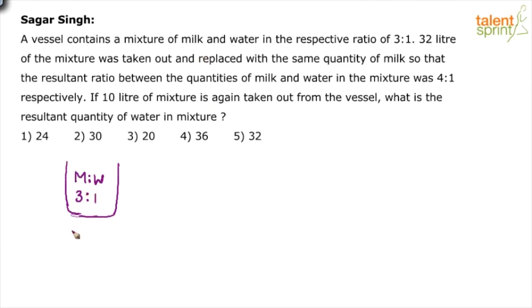32 liters of the mixture was taken out — so minus 32 from this vessel. And it was replaced with the same quantity of milk, so that the resultant ratio between the quantities of milk and water in the mixture became 4 is to 1.